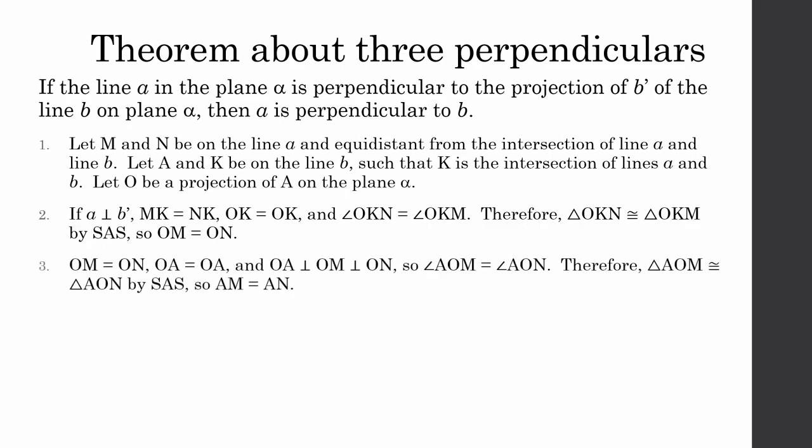We can also show that triangle AOM is congruent to triangle AON by side-angle-side, because OM is equal to ON, OA is equal to OA, and OA is perpendicular to OM, which is also perpendicular to ON. This means that angle AOM is equal to angle AON, and if these two triangles are congruent, AM is equal to AN.